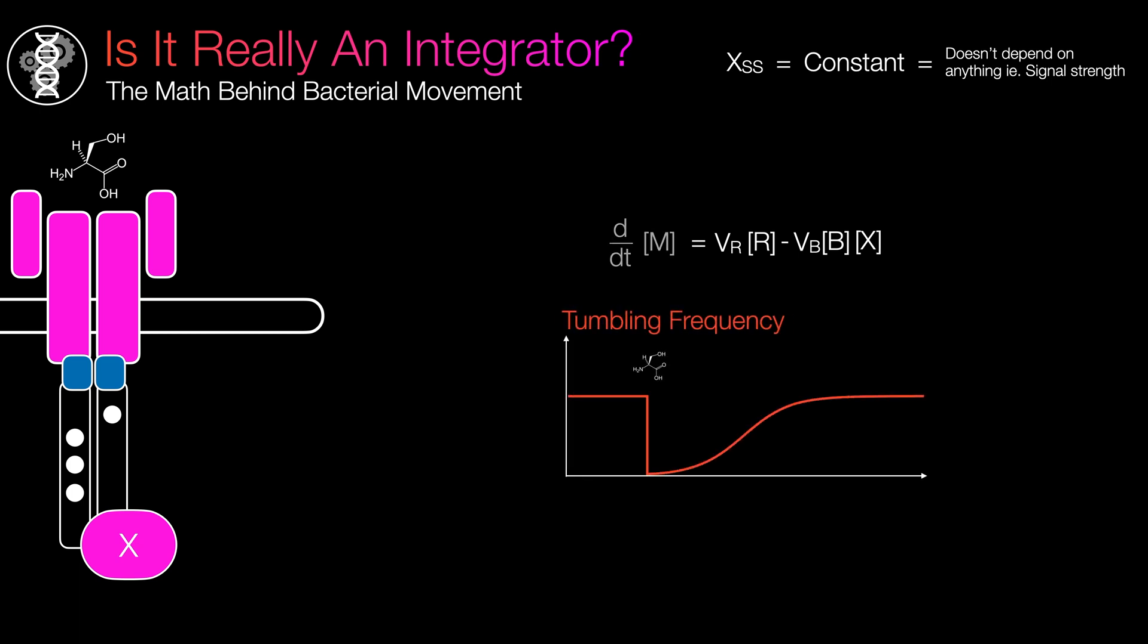Therefore, in this condition, the system reaches equilibrium. Everything is in steady state. So we can set dm/dt to zero and solve for X steady state. And there you have it. You can observe that X steady state does not depend on the input whatsoever.